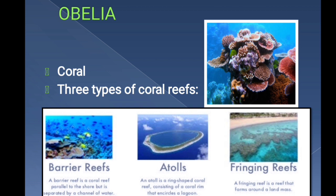The barrier reef remains parallel to the shore — an example is the Great Barrier Reef of Australia. Atolls are circular reefs — an example is the Lakshadweep Islands. The fringing reef forms around a landmass — an example is the south coast of Florida. These corals are bright in color and are used in decoration.